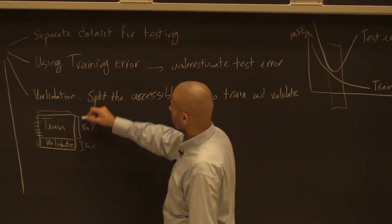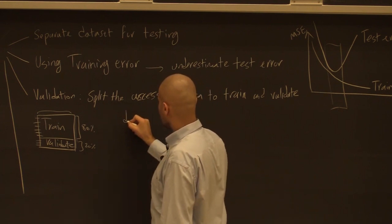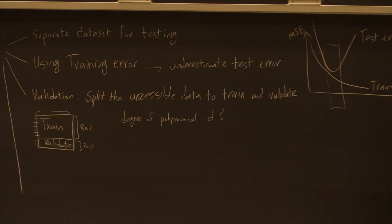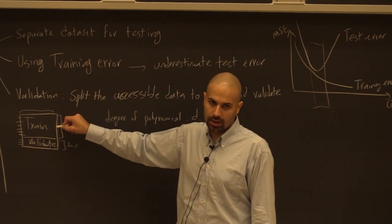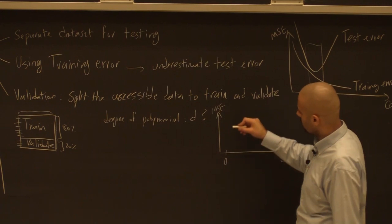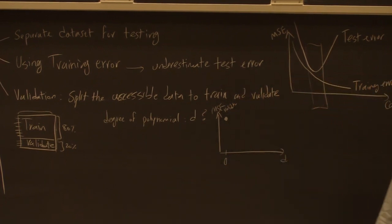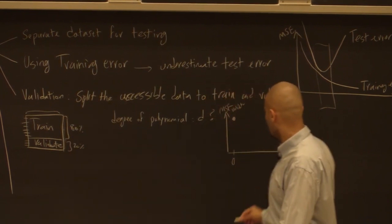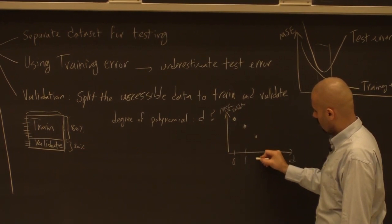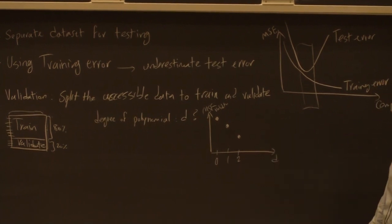For example, suppose we want to tune the degree of polynomial. We don't know whether to use linear, quadratic, cubic, or degree four. We train with degree zero — just the average of y values — and validate to get some MSE. Then degree one, validate to get another MSE. Then quadratic, cubic, and so on. This produces MSE values for each degree d, giving us a pattern across degrees.